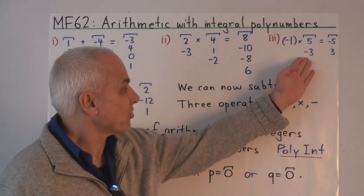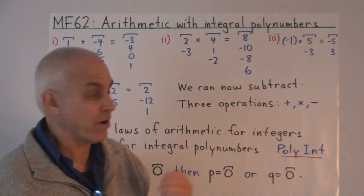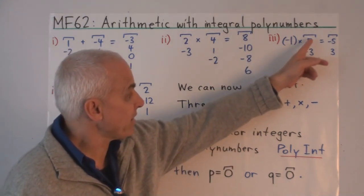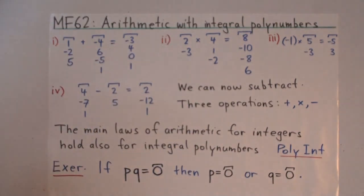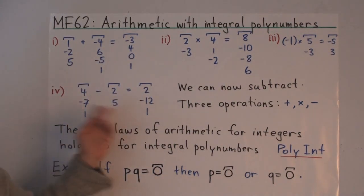We can multiply an integral polynumber by a scalar or a number. So for example, minus one times five minus three is minus five three.